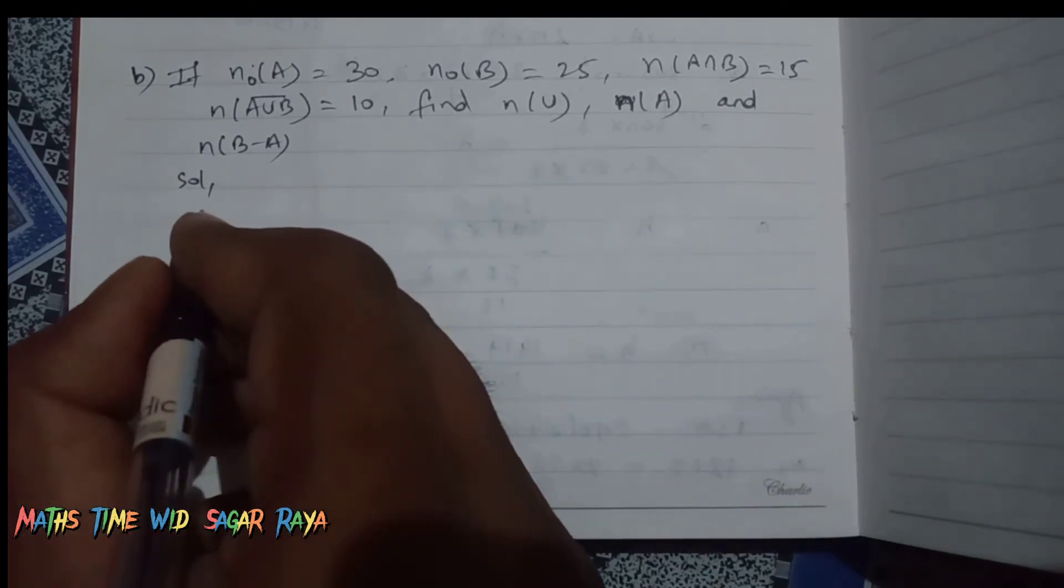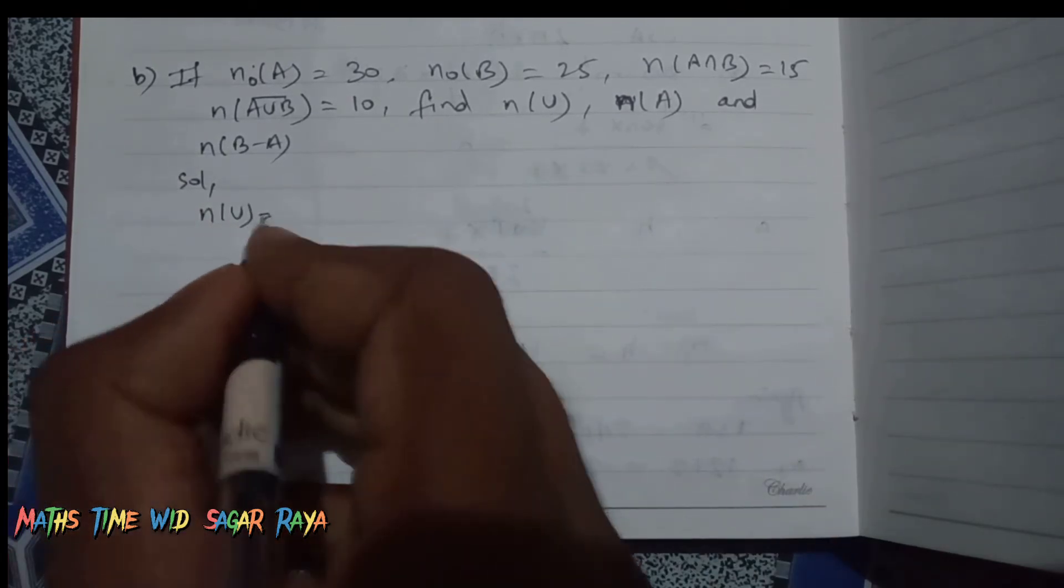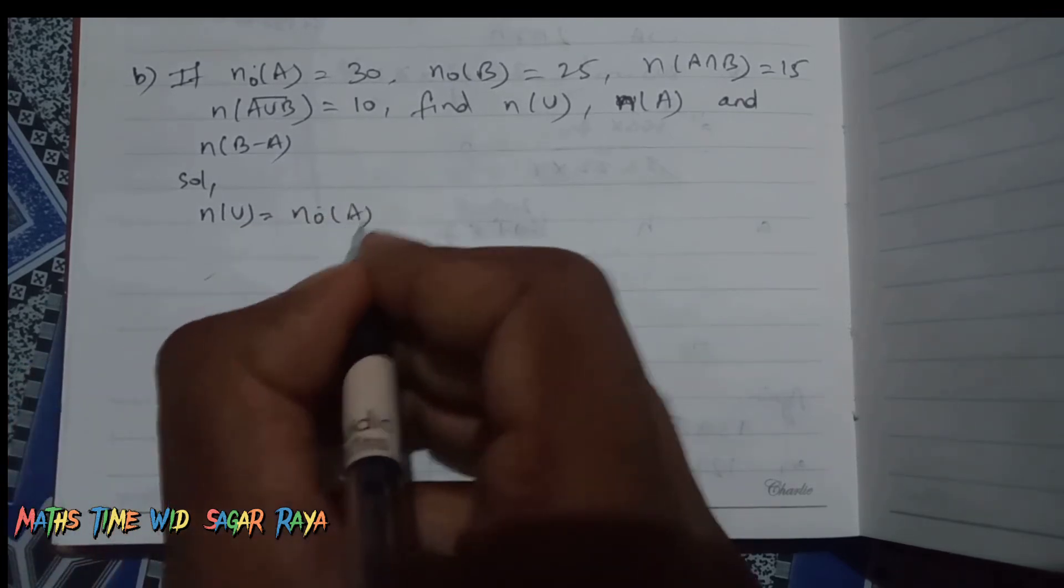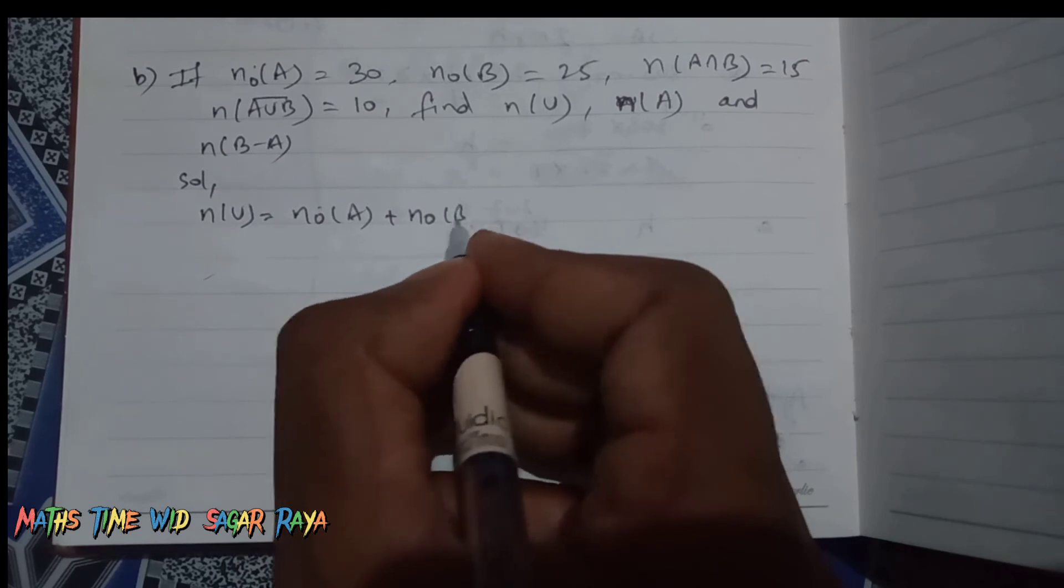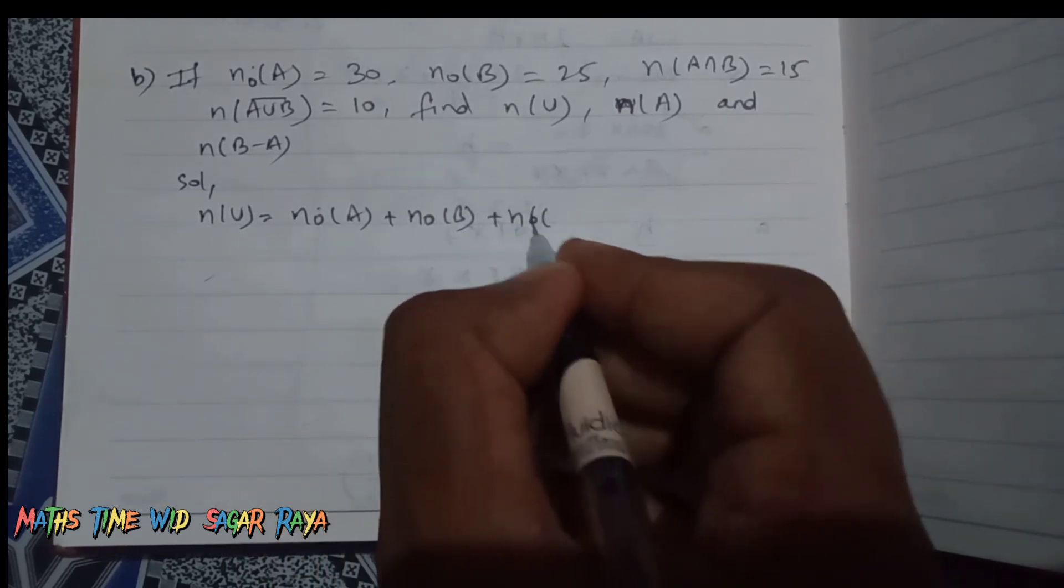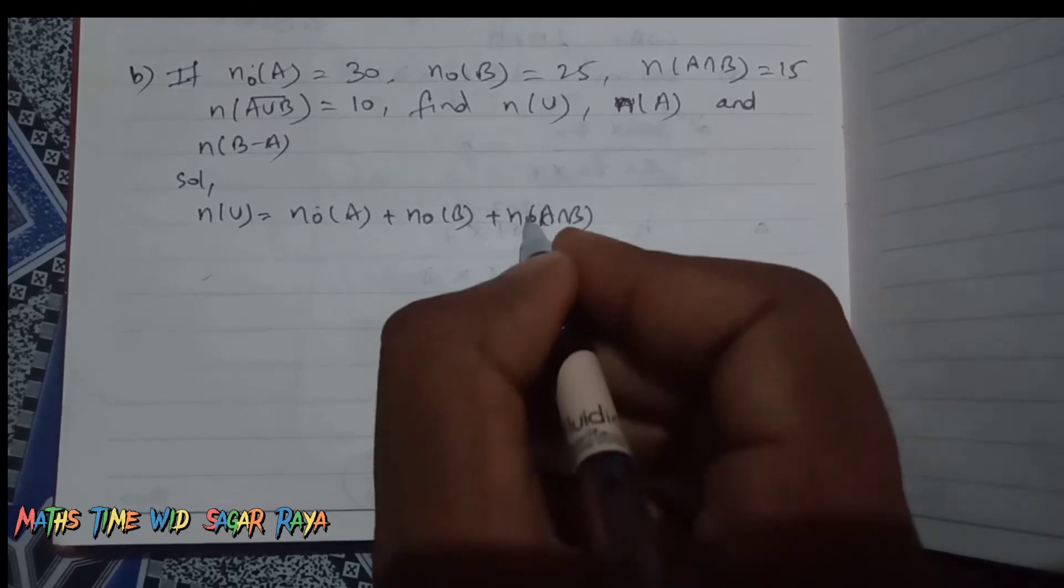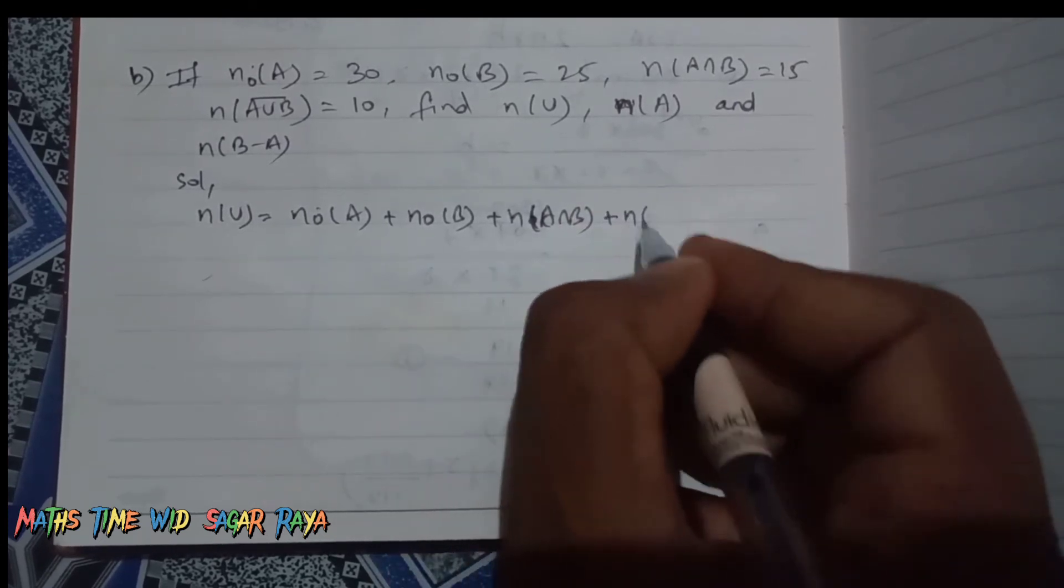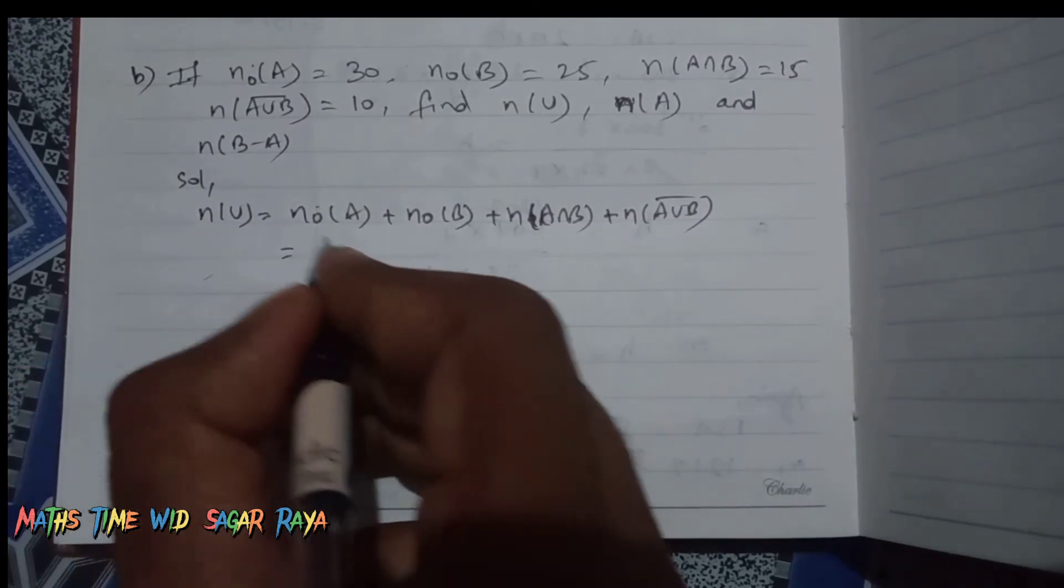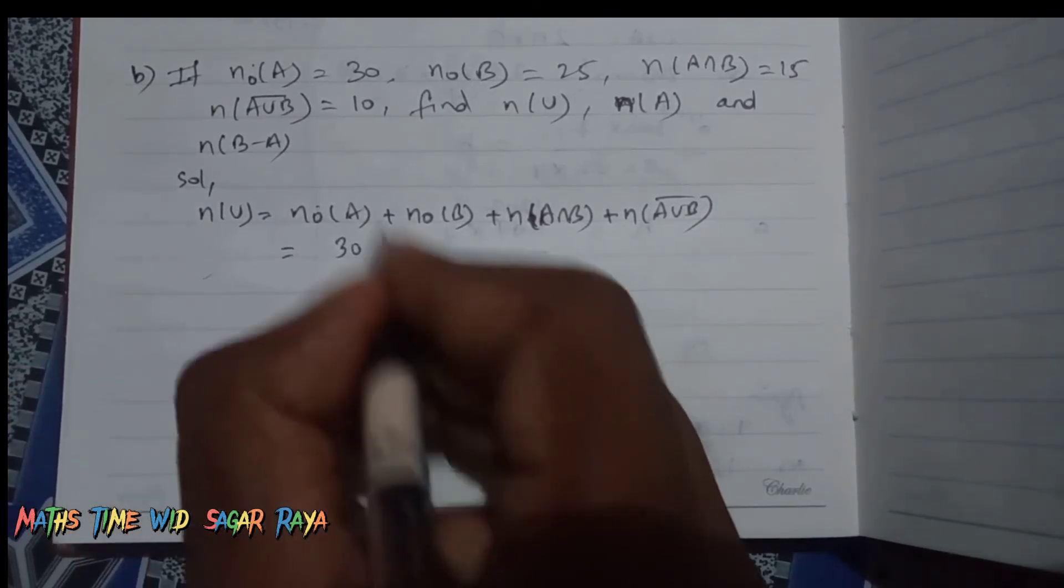The formula to find n(U) is equal to n(only A) plus n(only B) plus n - sorry - n(A∩B) plus n(A∪B)'. So n(only A) is given here 30, n